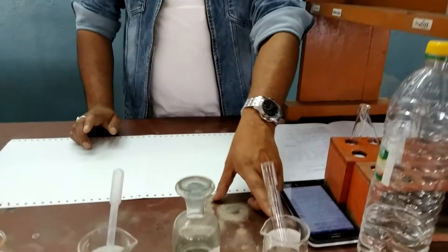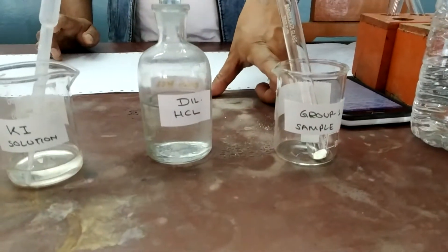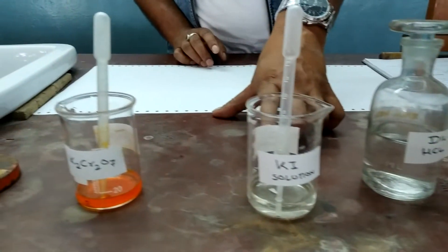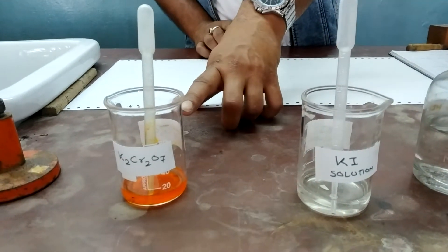For that we require a sample, dilute HCl, potassium iodide solution and potassium dichromate solution.